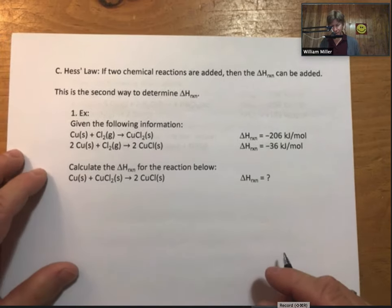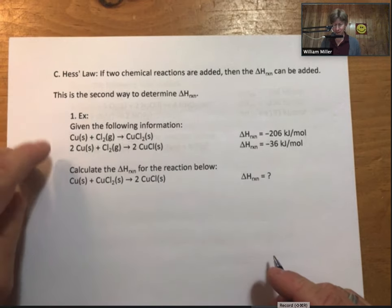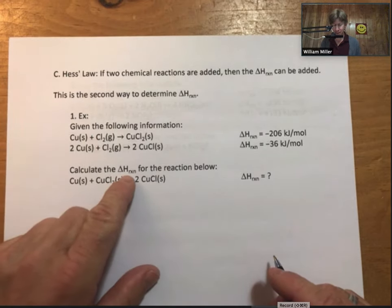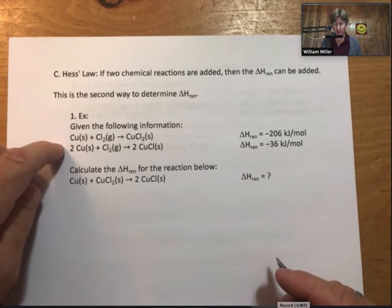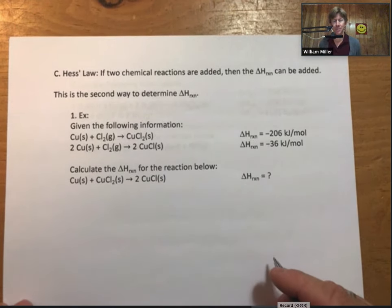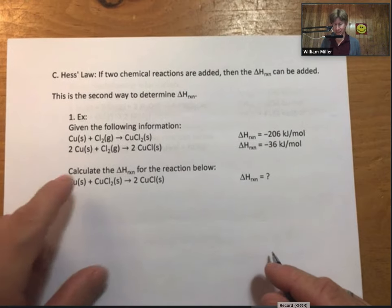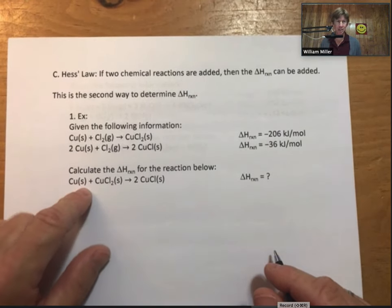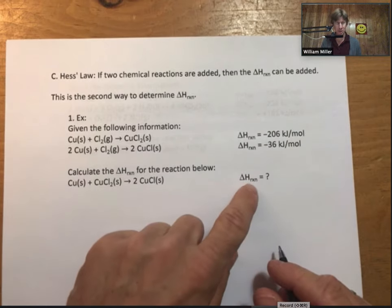In this first example, what we're going to do is we're going to use Hess's law to calculate delta H for a reaction for which we don't know the value based on two reactions for which we do know their delta H reaction values. And this is a powerful technique for finding delta H for reactions that are harder to do based on reactions that are easier to do. And so this is our second way to find delta H reaction.